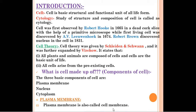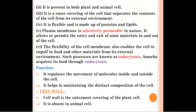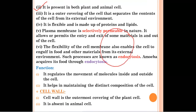We will start our discussion with plasma membrane, which is also called cell membrane — both are the same thing. It is present in both plant and animal cells. It is the outer covering of the cell that separates the content of the cell from its external environment. It is flexible and made up of proteins and lipids.